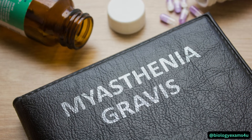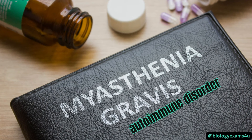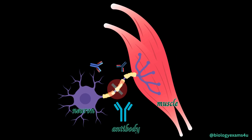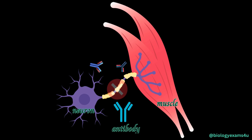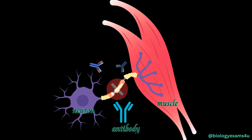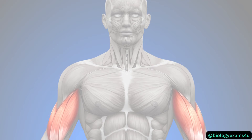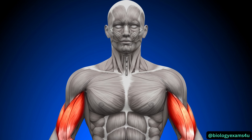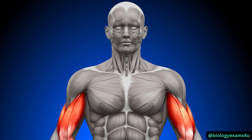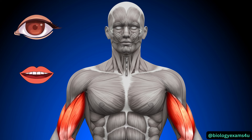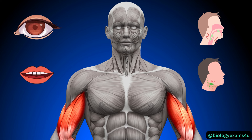Myasthenia gravis is a chronic autoimmune disorder in which antibodies destroy the communication between nerves and muscle, resulting in weakness of the skeletal muscles. It affects the voluntary muscles of the body, especially those that control the eyes, mouth, throat, and limbs. The disease can strike anyone at any age, but is more frequently seen in young women aged 20 to 30, and men aged 50 and older.